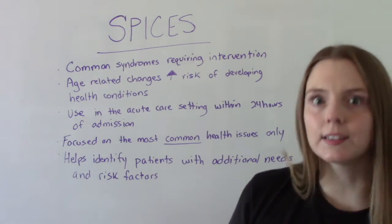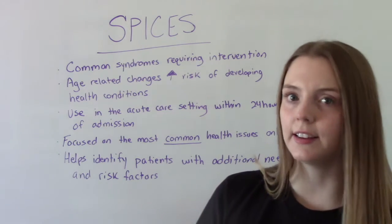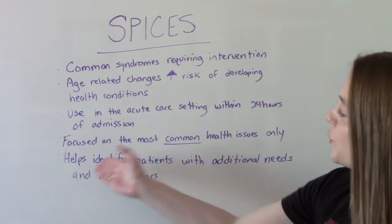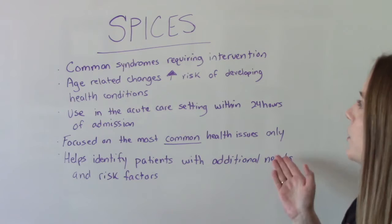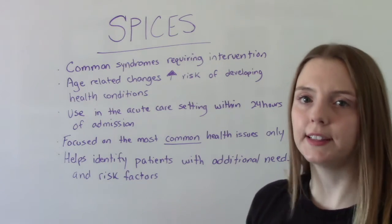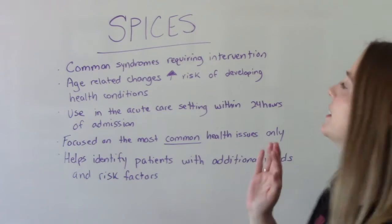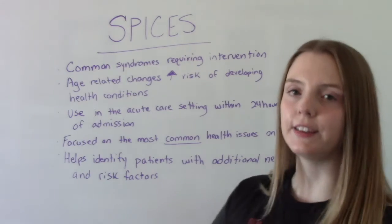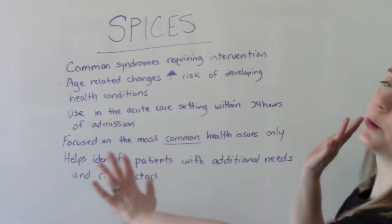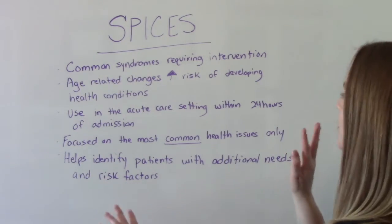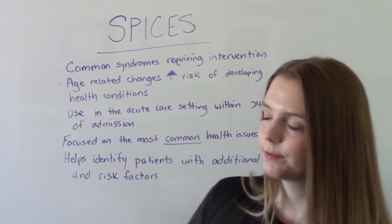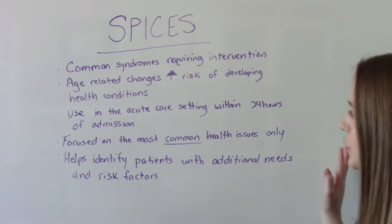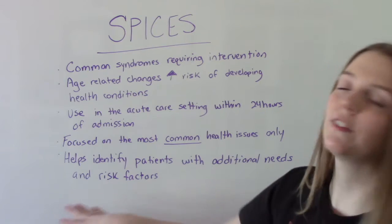In the acute care setting — like the hospital setting — it is recommended that this is done within the first 24 hours of admission. It is focused on the most common health issues only. This is not a catch-all; you still have to do a full individual head-to-toe, because while it covers the most common health issues in the elderly, it doesn't cover everything. It also helps to identify patients who have additional needs, require additional nursing intervention, or have other risk factors.